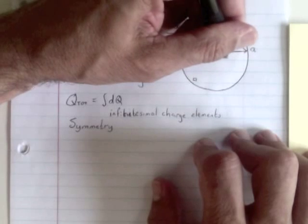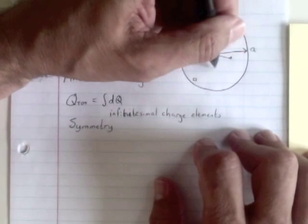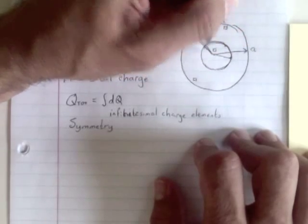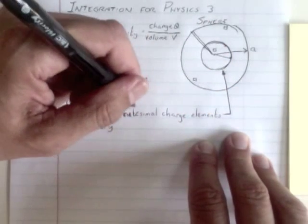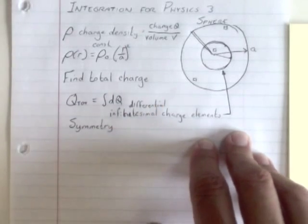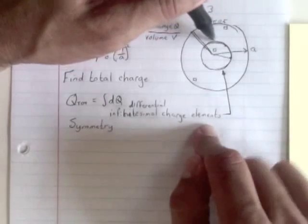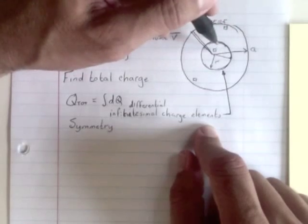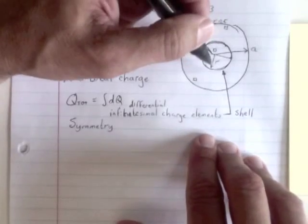That spot will have the same charge density as this spot, as this spot. Everything that's equidistant from the center will have the same charge density. So we want our differential charge elements to be the same distance. Every charge element should have all the spots that are the same distance, one distance R from the center. If we're talking about a sphere, then this ends up being a shell, an infinitesimally thick shell.